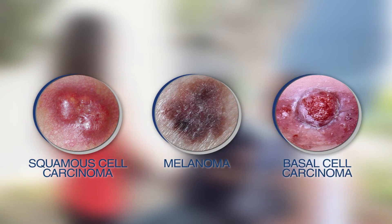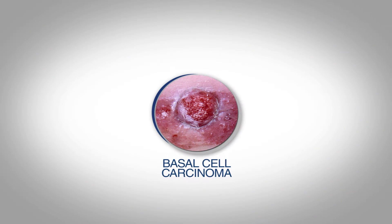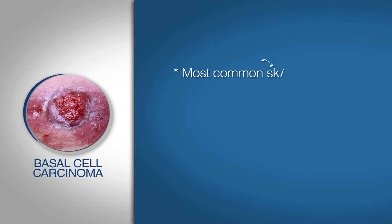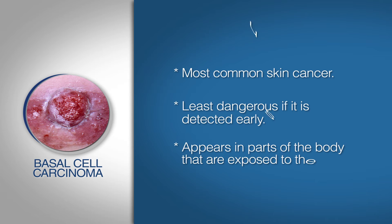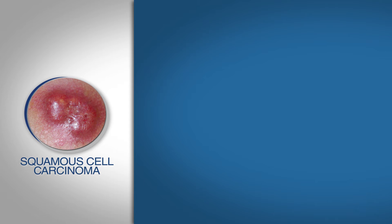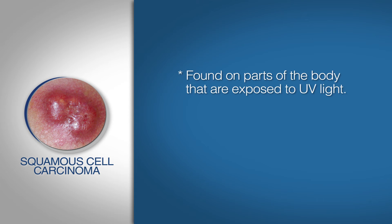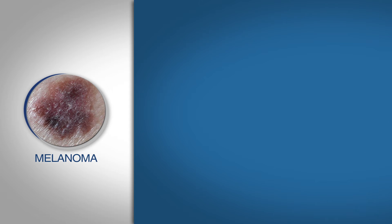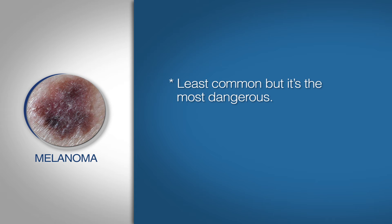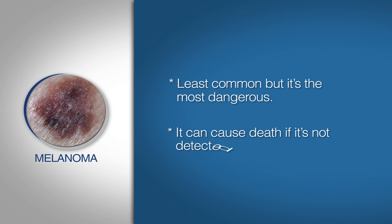There are three main types of skin cancer. Basal cell carcinoma is the most common skin cancer; however, it's the least dangerous if detected early. This cancer usually appears in parts of the body that are exposed to the sun. Squamous cell carcinoma is usually found on parts of the body exposed to ultraviolet light; therefore, it can appear on legs or feet and it can be locally invasive. Melanoma is the least common, but it's the most dangerous because it can cause death if it's not detected early.